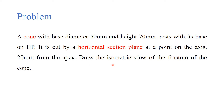As usual when going for an isometric view, you will follow three steps. The first step is a simple projection where you project the cone. The second step is getting the section points by applying the section plane, and the third is the isometric projection.